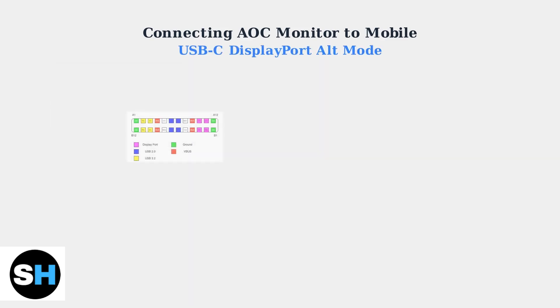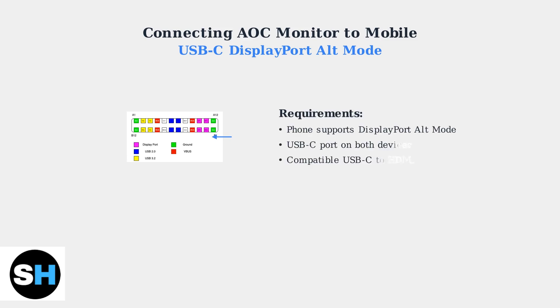For USB-C connections, your smartphone must support DisplayPort alt mode. This allows the USB-C port to output video signals directly. The magenta-colored pins in this diagram show the DisplayPort connections that enable video transmission.